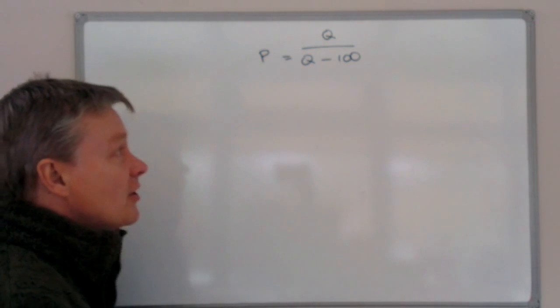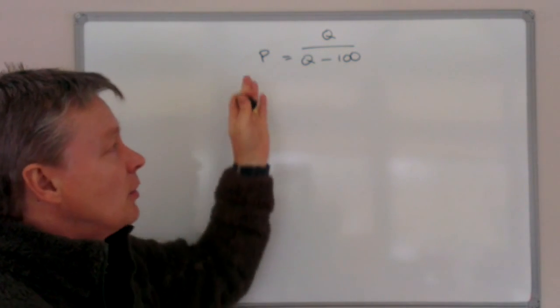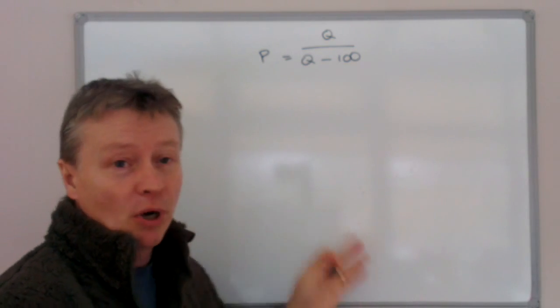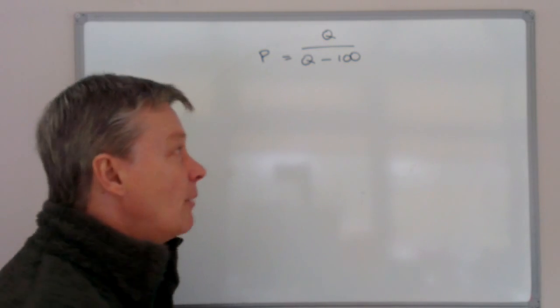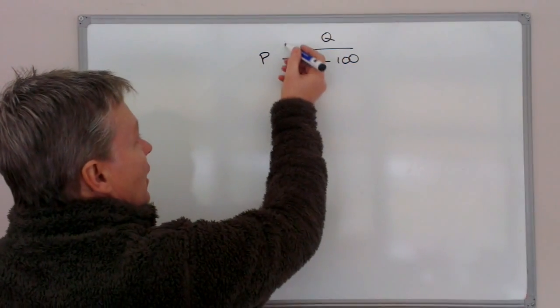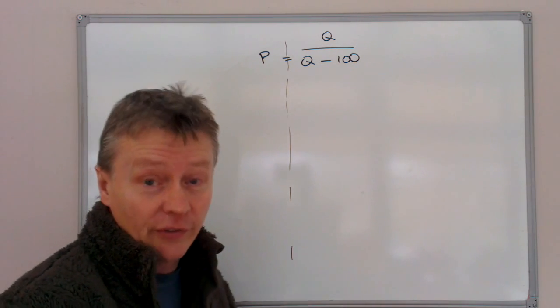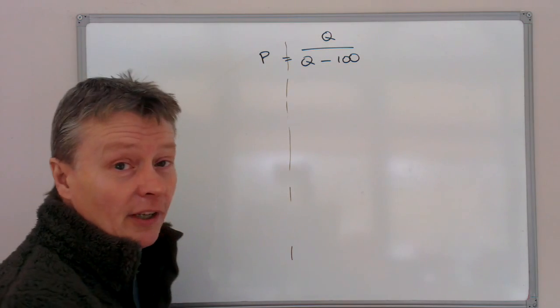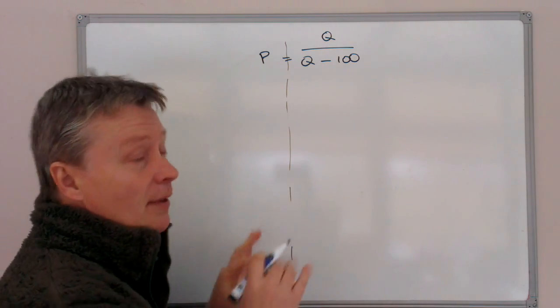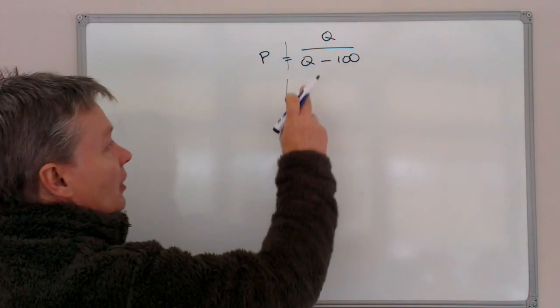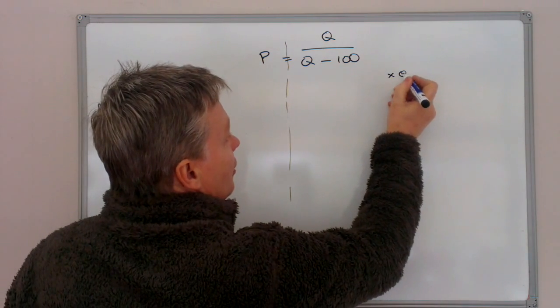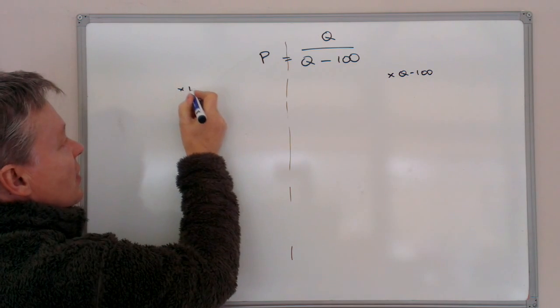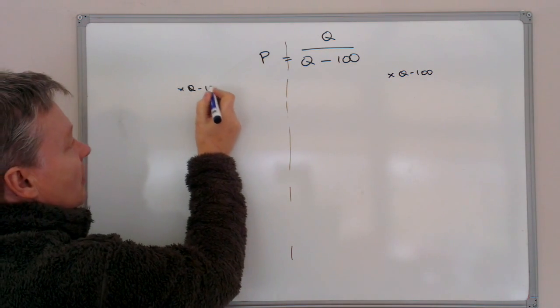So the first thing I'm going to do is multiply both sides of this equation by Q minus 100. And like before, it's better to work down the page if you can with the equal sign in the middle and also show to the examiner each of the steps that you're taking. So I'm going to multiply both sides by Q minus 100. Now if I do it to this side, I have to do it to this side.